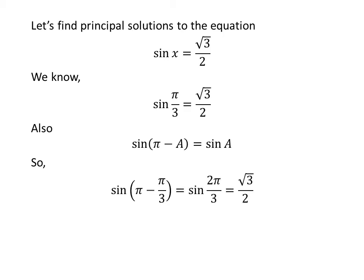Application of the above identity implies that sine of π minus π upon 3 equals square root of 3 upon 2. This implies sine of 2π upon 3 equals square root of 3 upon 2.